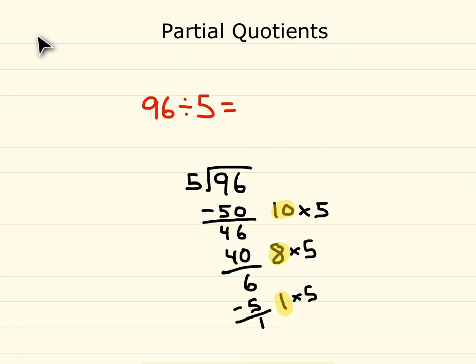We're now done with our division problem. We can just add up the yellow highlighted numbers, and 10 plus 8 is 18 plus 1 more is 19. So each person got 19 total jelly beans. And we have that 1 down here on the bottom remaining. So we have a remainder of 1.